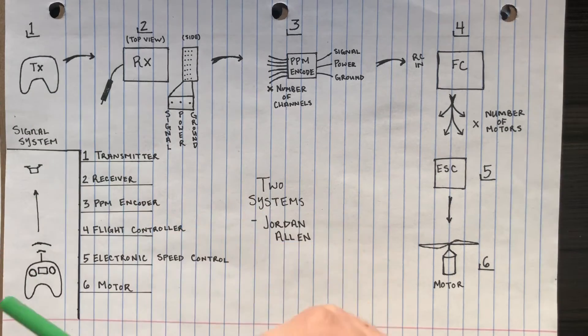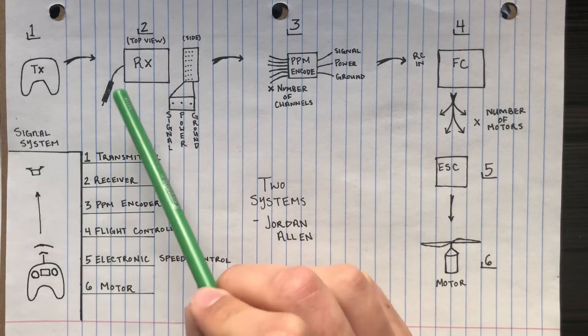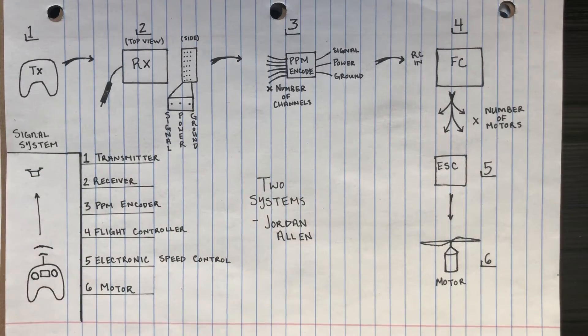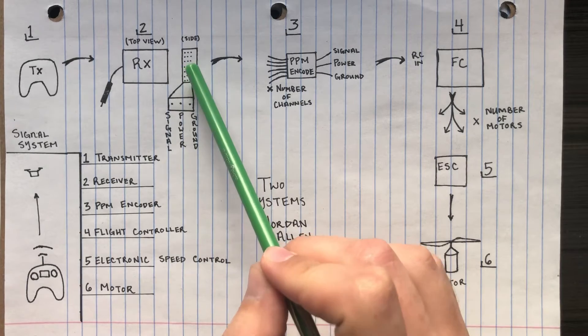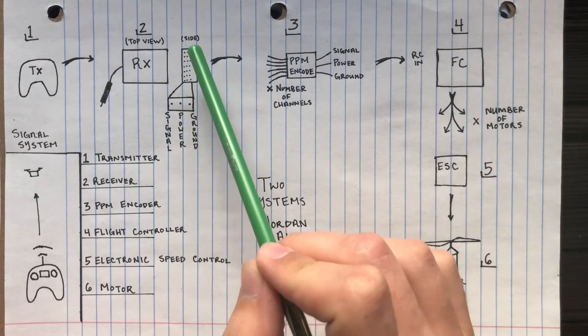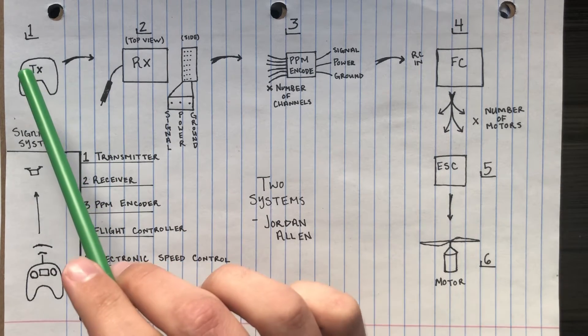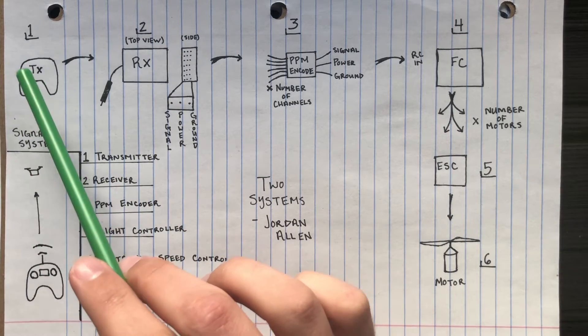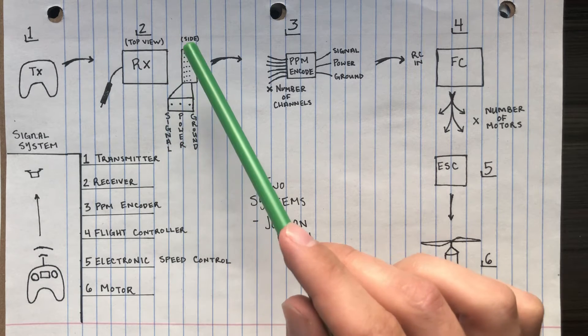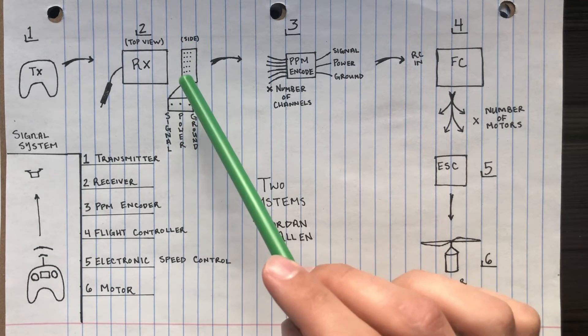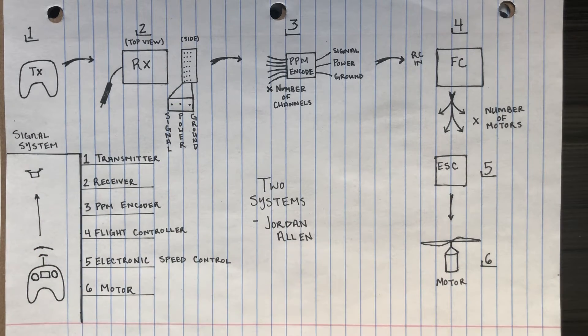So when you send a signal from your transmitter, it goes to the receiver which is inside your quadcopter. So the receiver or RX, here's a top view of it and here's a side view of it so we can see all eight channels with all the pins and all that. So the receiver receives anything sent from the transmitter. Once it gets to the receiver, the receiver has eight channels that it can send information to the quadcopter on how it wants it to behave.